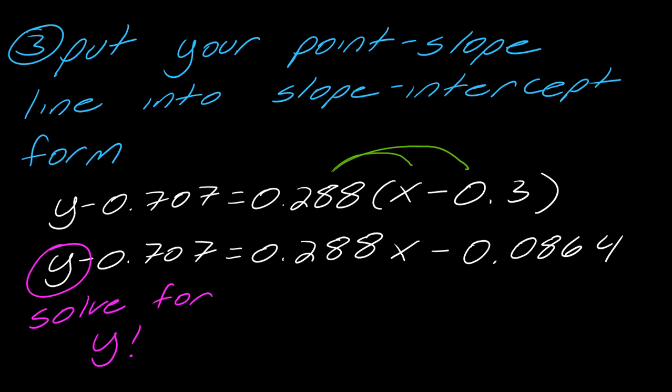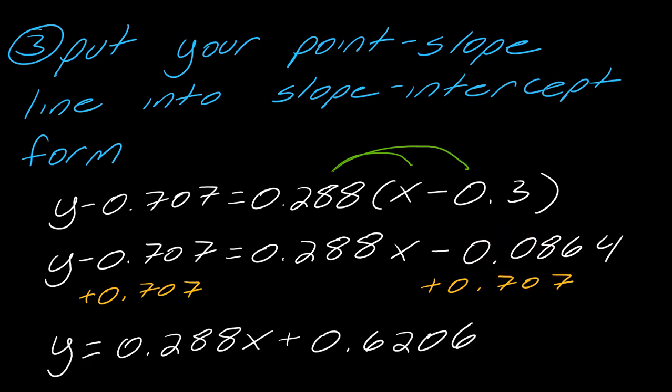So when I do that I get on this side this now becomes 0.288x minus 0.0864. And now remember I want to solve for y, that was the whole point here. So to finish solving this for y all I have to do then is take that 0.707 and then I'll just add it to each side like you see here. And so this will drop out of course and so then if I complete the math over here the equation that I'm going to get is 0.288x plus 0.6206.